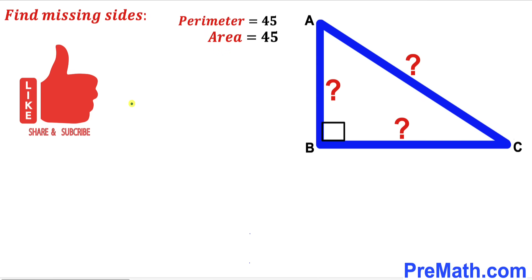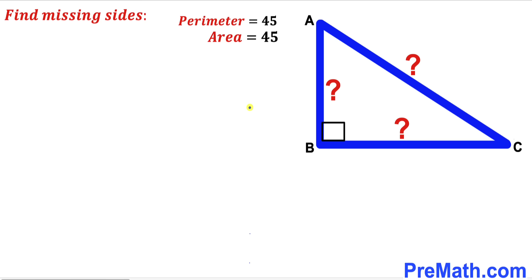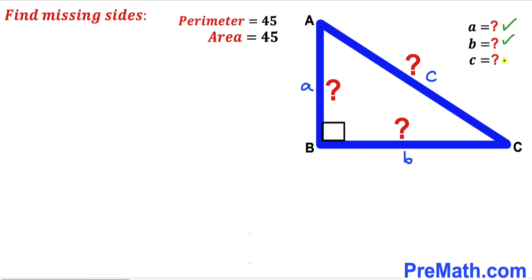Please don't forget to give a thumbs up and subscribe, and please keep in mind that this figure may not be 100% true to scale. Let's go ahead and get started. I'm going to label these side lengths: the hypotenuse as lowercase c, the perpendicular side as lowercase a, and the base as b. Now we are going to solve for a, b, and c.